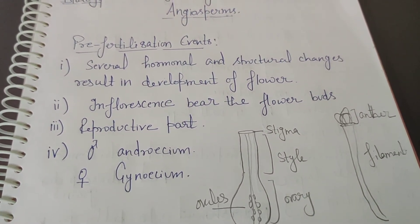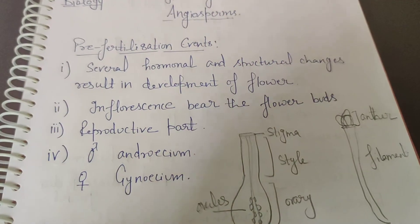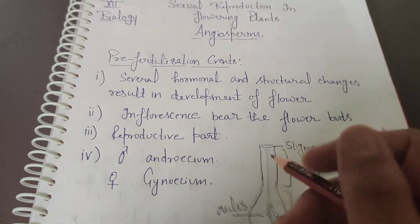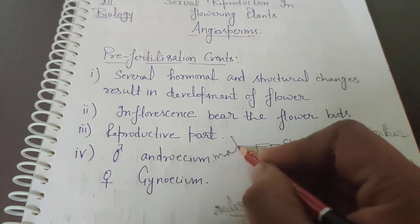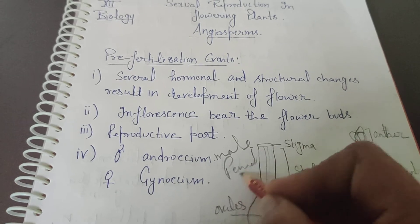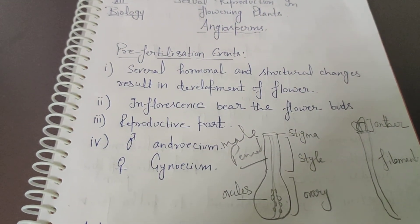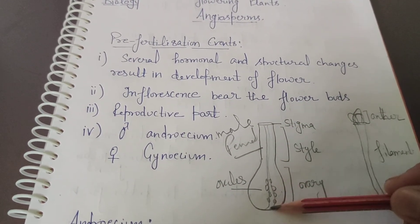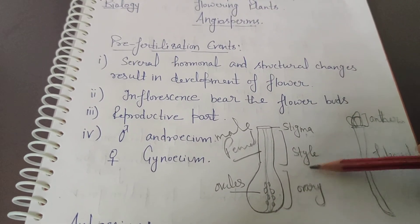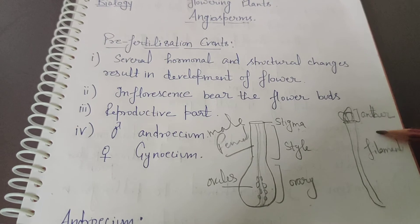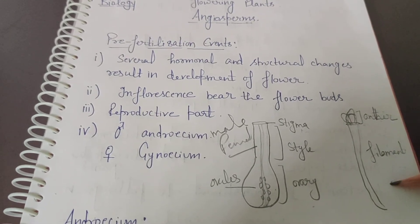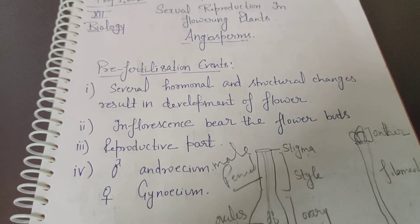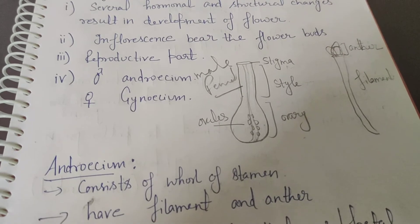The reproductive parts of the flower are the androecium and gynoecium. Androecium is the male part and gynoecium is the female part. If you look at the structure of the male and female parts, the pistil or gynoecium consists of the stigma, style, and ovary. The androecium consists of the anther and filament. These are the two reproductive parts present in the flower — male and female. First, we will talk about the androecium.